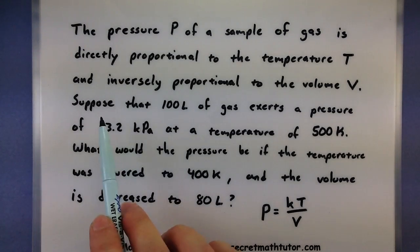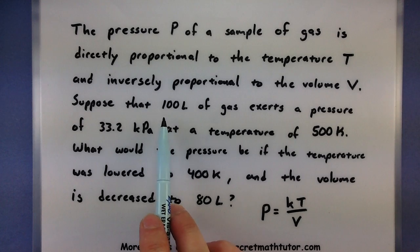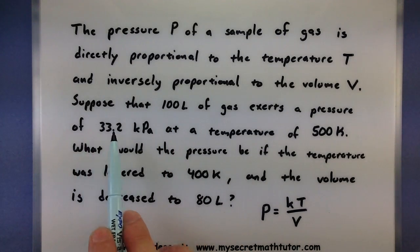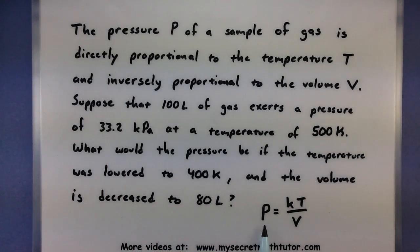That's what we'll use this information initially here. So we've got 100 liters of gas, we'll put that in for volume. Exerts a pressure of 33.2 kilopascals, so we'll put that in for our pressure here. And our temperature, we'll put it in for t.